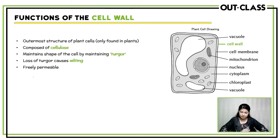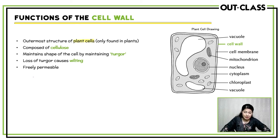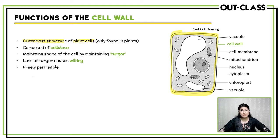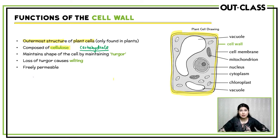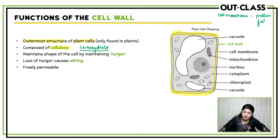Coming to the functions of the cell wall: we know the cell wall is only found in plant cells and it is the outermost structure of plant cells. You can see this structure surrounding the cell membrane — that is your cell wall, the outermost structure of the plant cell. The cell wall of plant cells is composed of something known as cellulose, and cellulose is a carbohydrate. So the cell wall is made of cellulose (a carbohydrate), while the cell membrane is made of proteins and fats — an important difference.